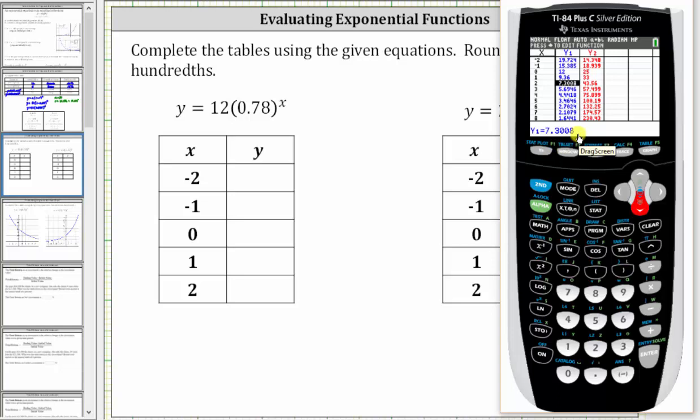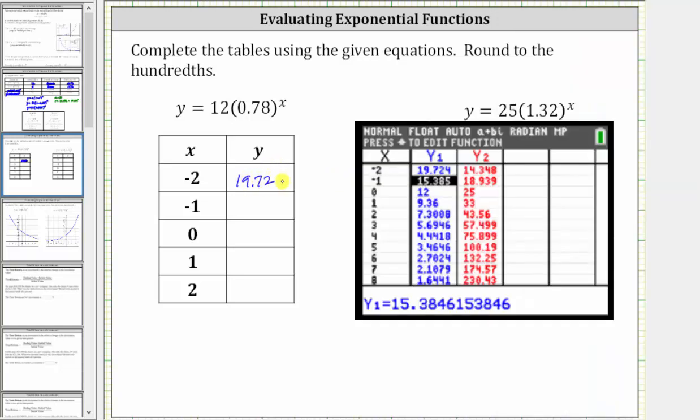Let's record the y values. Notice how as the x values increase, the y values decrease. This is an example of exponential decay, which we should recognize because the base b is between zero and one.